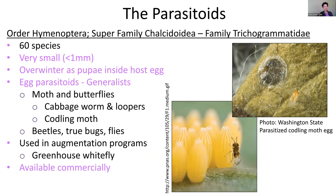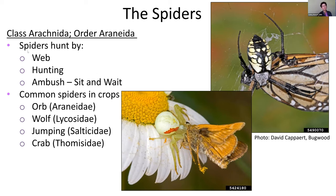Trichogrammatids are also less than one millimeter and parasitize insect eggs — you can see a little parasitoid parasitizing an insect egg, and a scale with an adult wasp next to the emergence hole. This group is commercially available and often used in greenhouses. Finally, I want to remind everyone that spiders are predaceous too — generalists that can attack pest insects. Common examples include jumping spiders, wolf spiders, and crab spiders.